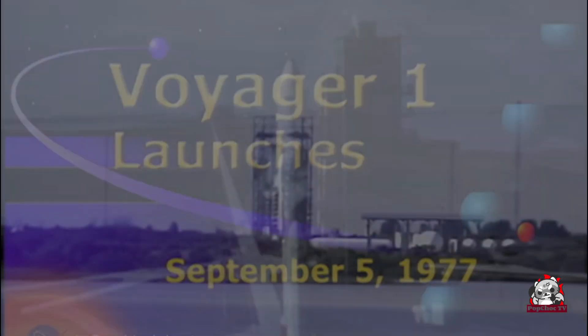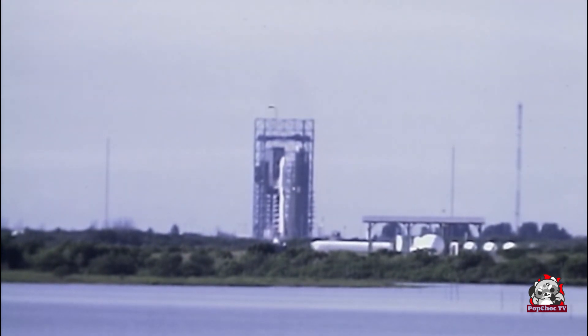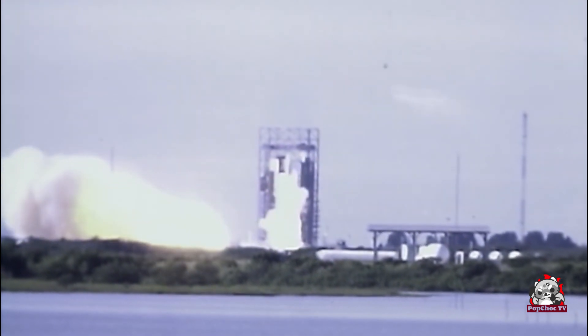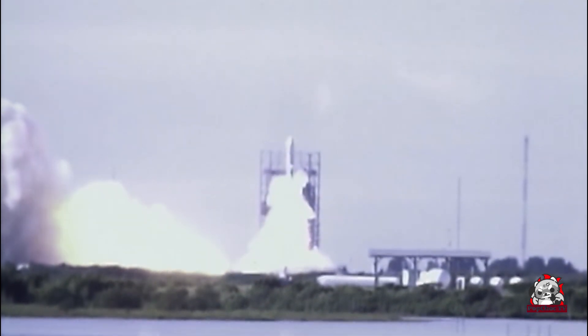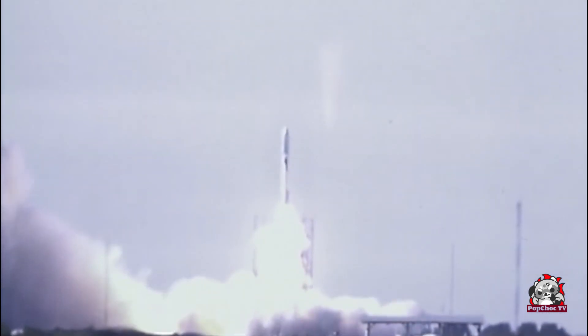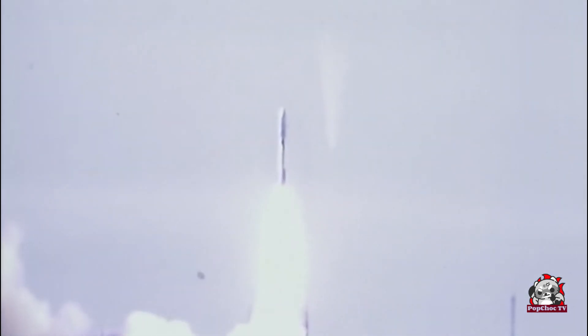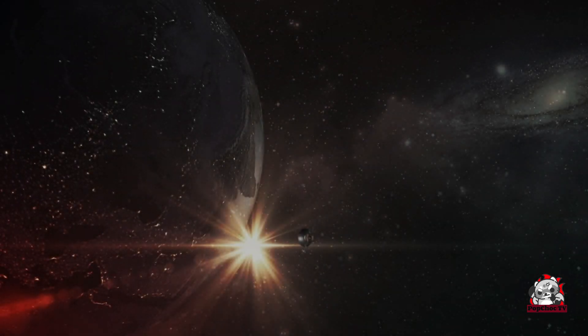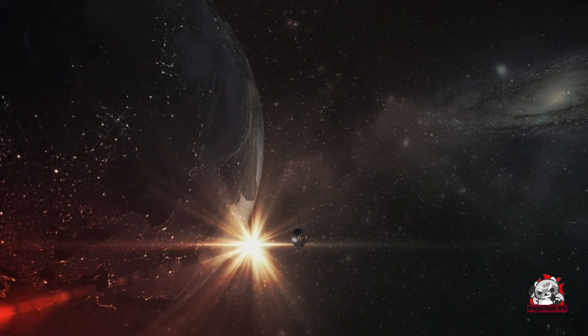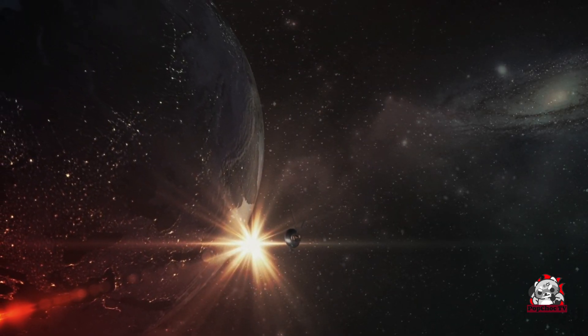At number 7, we have the Voyager 1 spacecraft entering interstellar space. In 2012, Voyager 1 became the first human-made object to venture into interstellar space after traveling for more than 35 years and covering over 11 billion miles. This incredible achievement has provided invaluable insights into the outer limits of our solar system and the vast, uncharted territory that lies beyond.